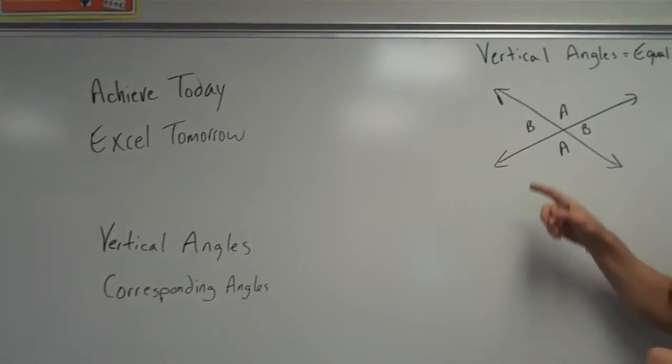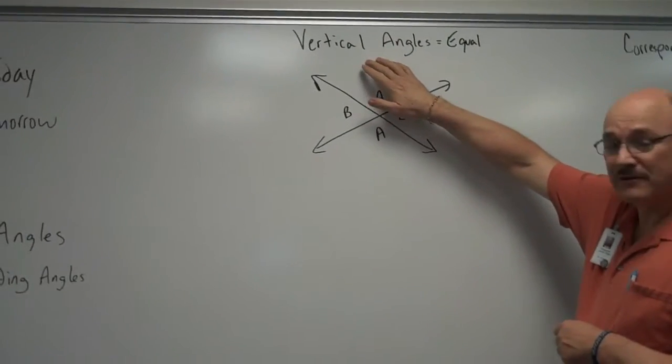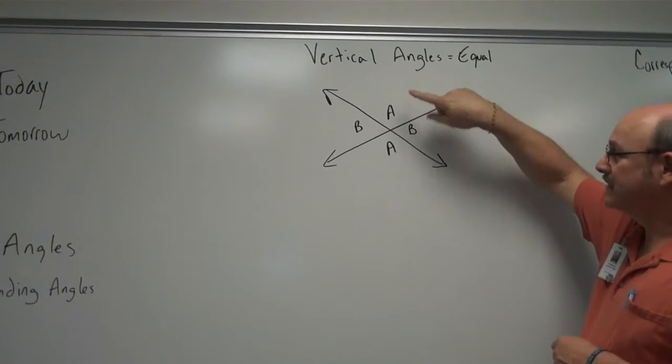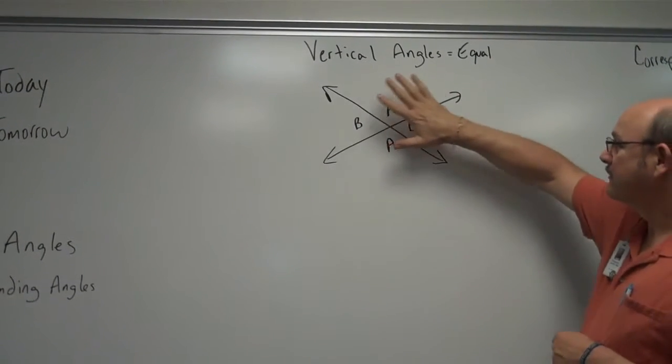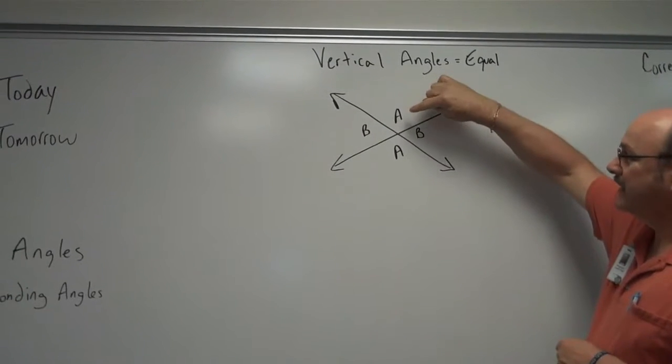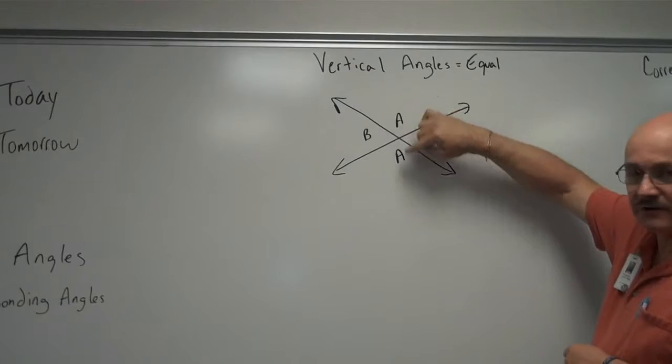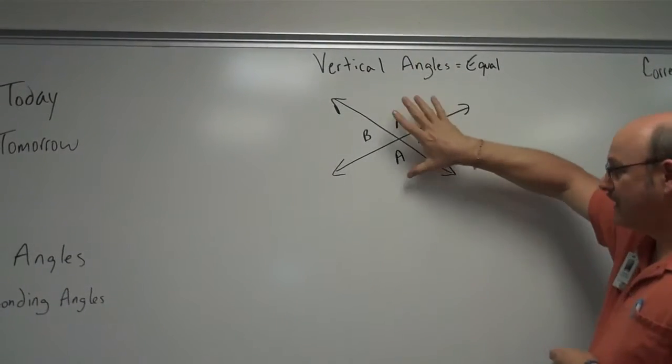To begin with, we have vertical angles. The important thing about vertical angles is they are equal. Vertical angles are angles that are opposite each other. Here we have two lines. We have angle A here and angle A here. These two angles are vertical angles. They're opposite each other. They're equal.